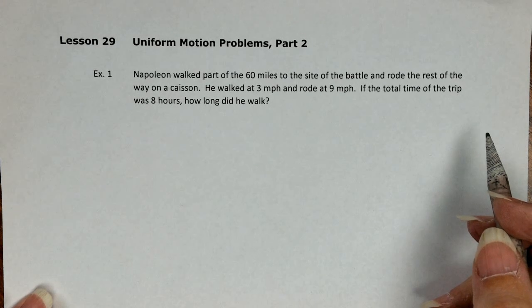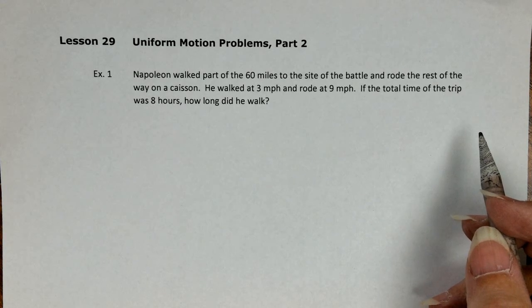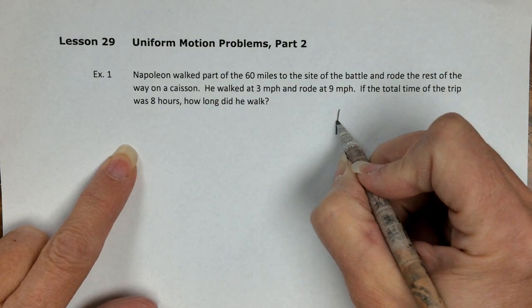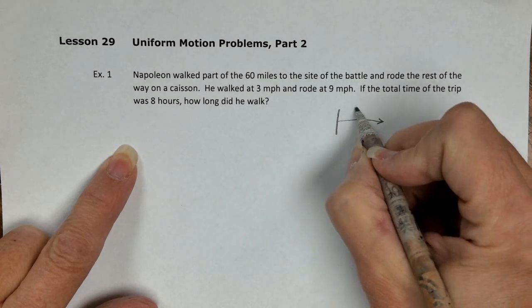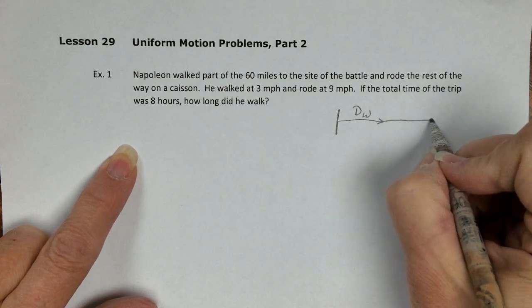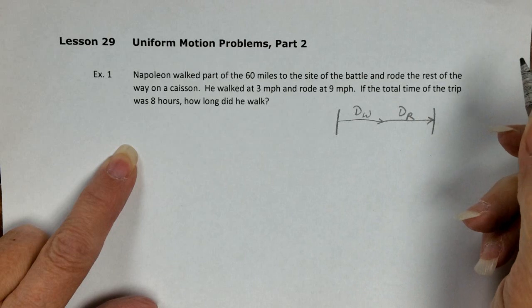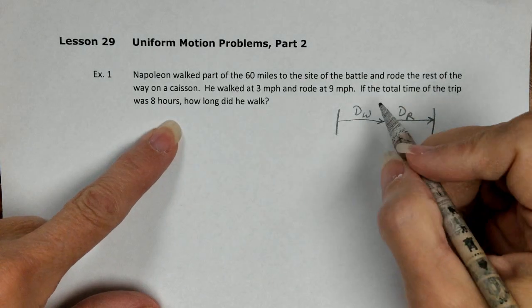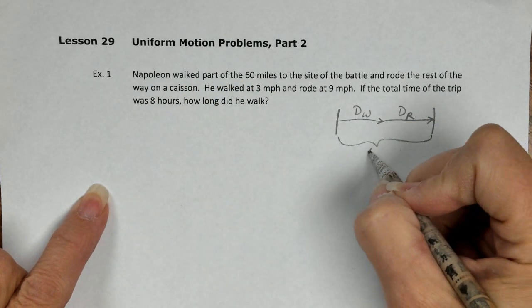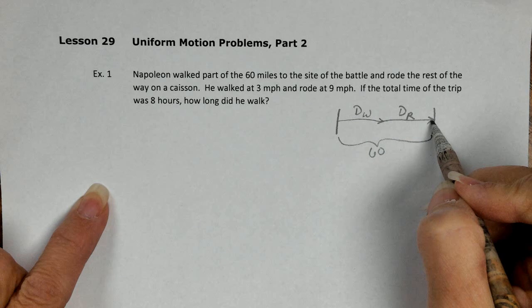So this is no longer about somebody like walking out and riding back where the distances are equal. They're just two parts of the trip. He started at some point, he walked—this will be his distance walking—and then he got a ride on a caisson and kept going. The total distance riding, his total is 60 miles. He walked part of the 60 miles. The whole thing was 60.